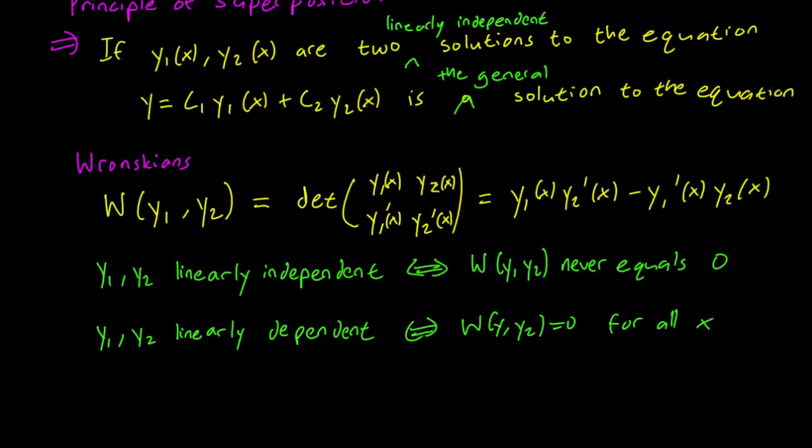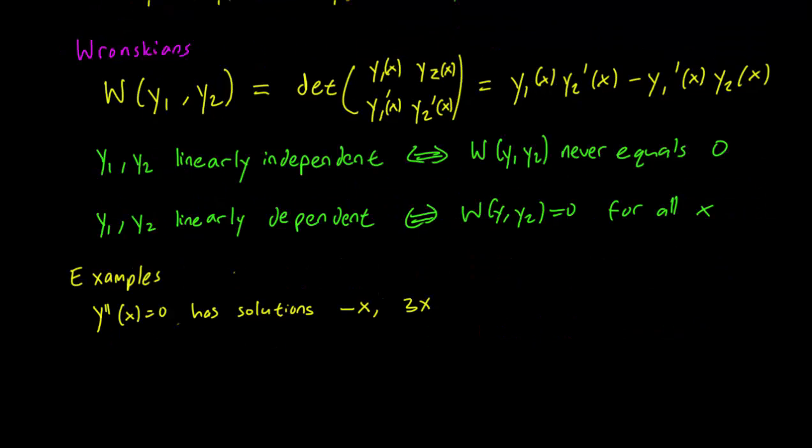So if y1 and y2 are linearly independent, the Wronskian of y1 and y2 never equals 0. So it's pretty straightforward to check. Let's look at the example.